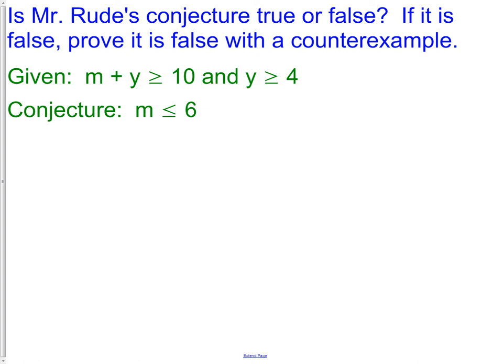A nice way to try and prove something false is to choose either the smallest or largest value. I'm going to choose Y is greater than or equal to 4. While the smallest value I could choose there is Y equals 4. Now we have to go back and figure out what can I add to Y to make 10. Well, if I have M equal to 6, I do have something that's greater than or equal to 10. Now if we check out, is M less than or equal to 6? And it is. So this conjecture is actually true. We have no way to prove it false.